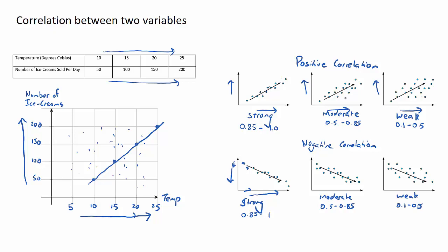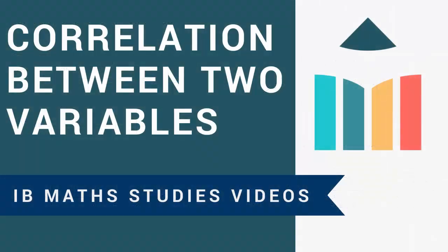There's a brief overview as to what correlation means. Basically, it's how close the line of best fit is to the data points and how to describe it. In the next video, we're going to look at calculating the line of regression equation and the correlation value r.